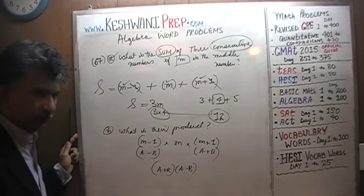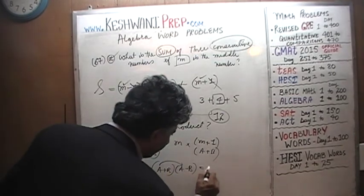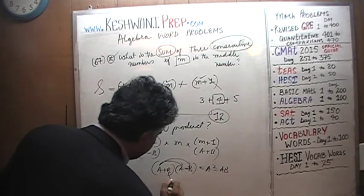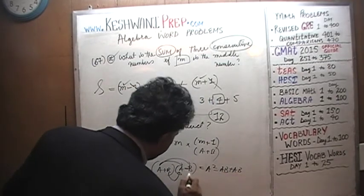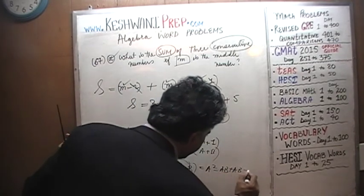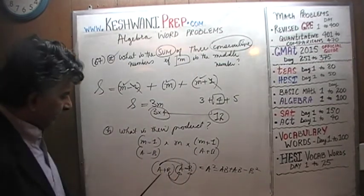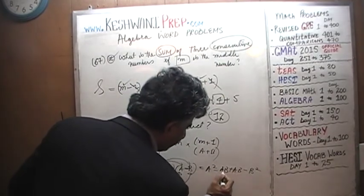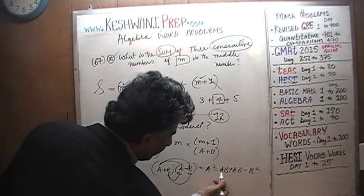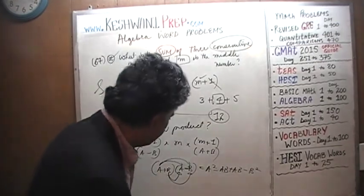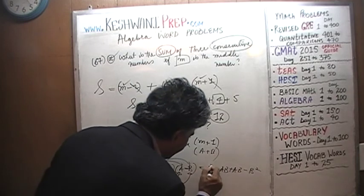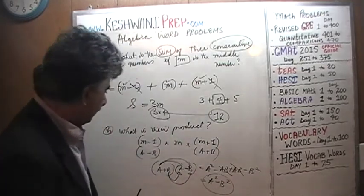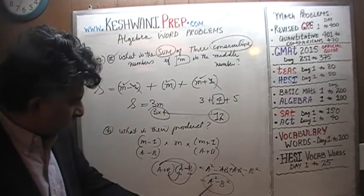If you don't remember the formula, just work it out. a times a is a squared, a times negative b is minus ab, b times a is positive ab, and b times negative b is negative b squared. The positive ab and negative ab cancel out, and it's simply a squared minus b squared. This is called the difference of two squares — one quantity squared minus the other quantity squared.